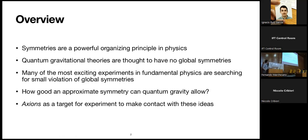The overview of what I want to talk about: I want to talk about symmetries, which are a powerful organizing principle in physics. A lot of us have been thinking, in the context of the swampland program, that quantum gravity theories are thought to not have any symmetries. That's an interesting puzzle — why do symmetries seem so important in the world around us when we fundamentally believe they don't even exist?